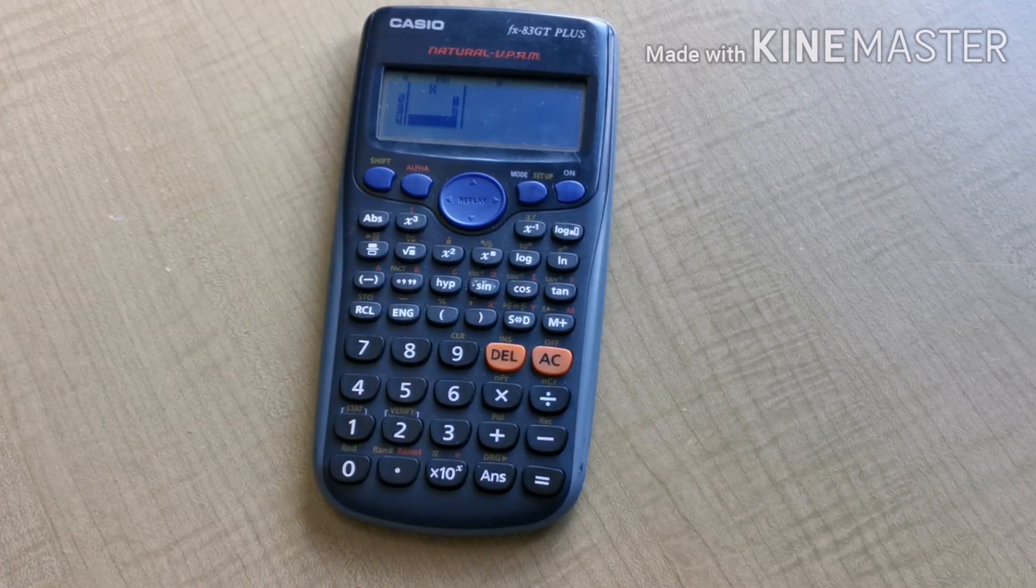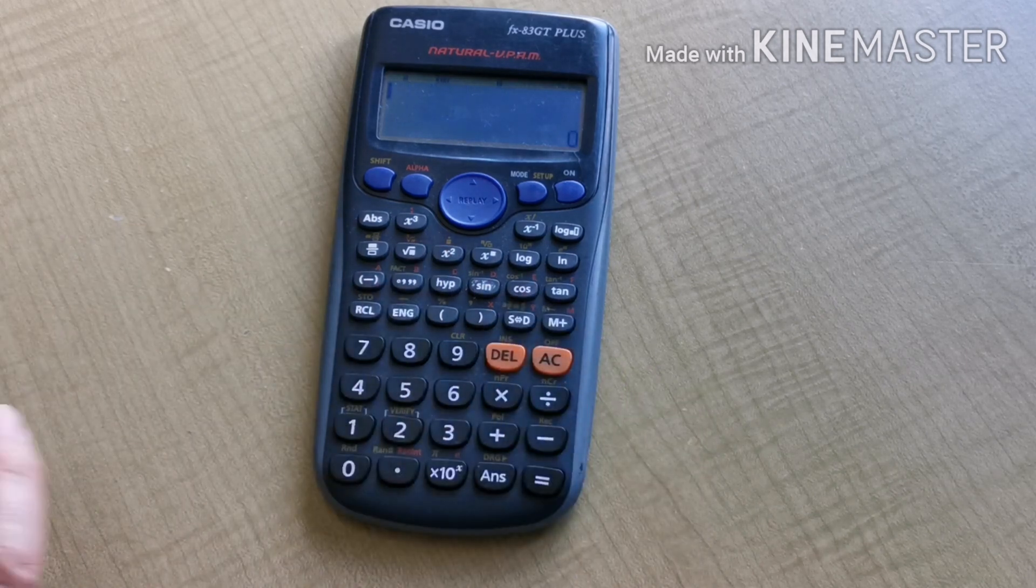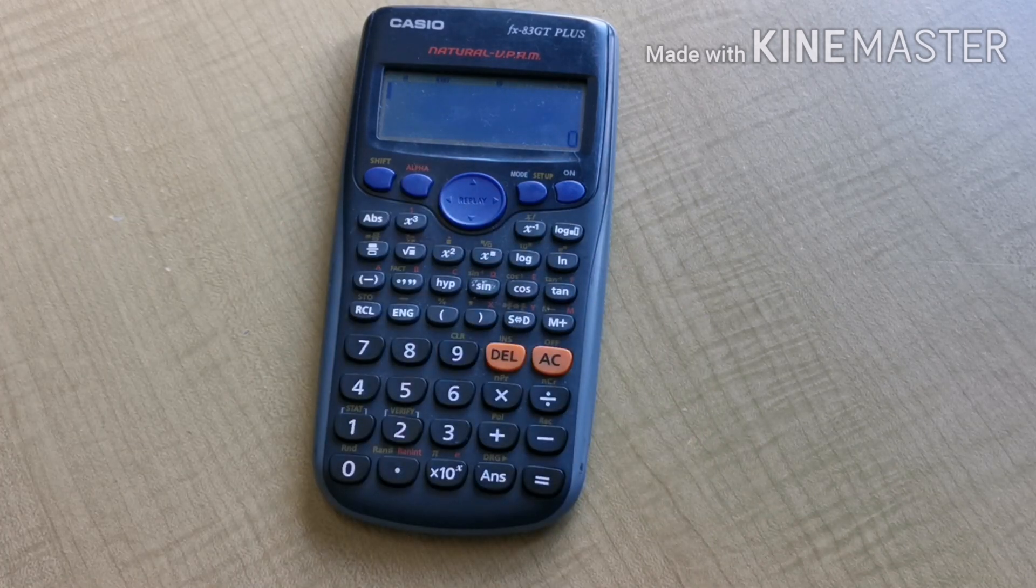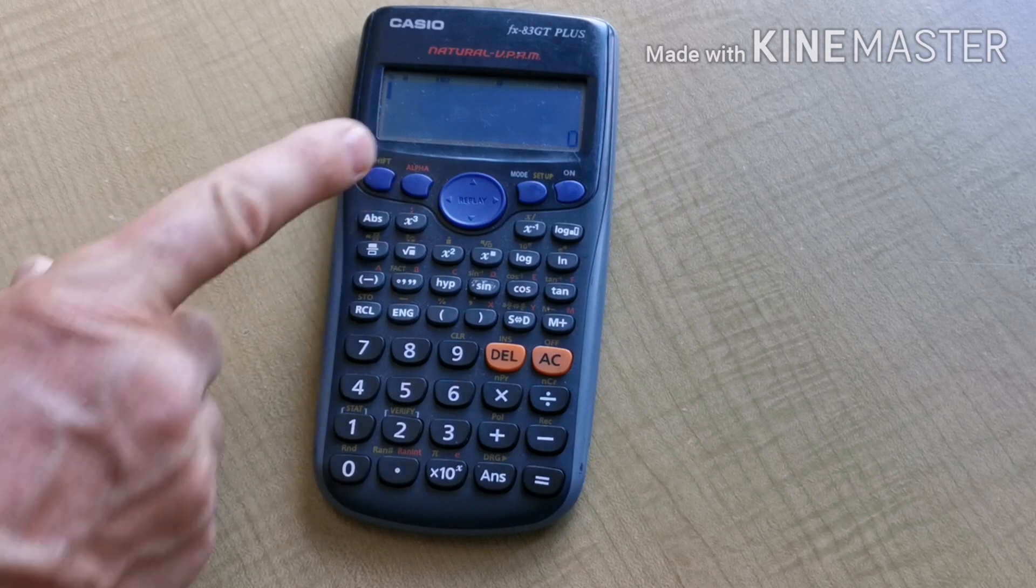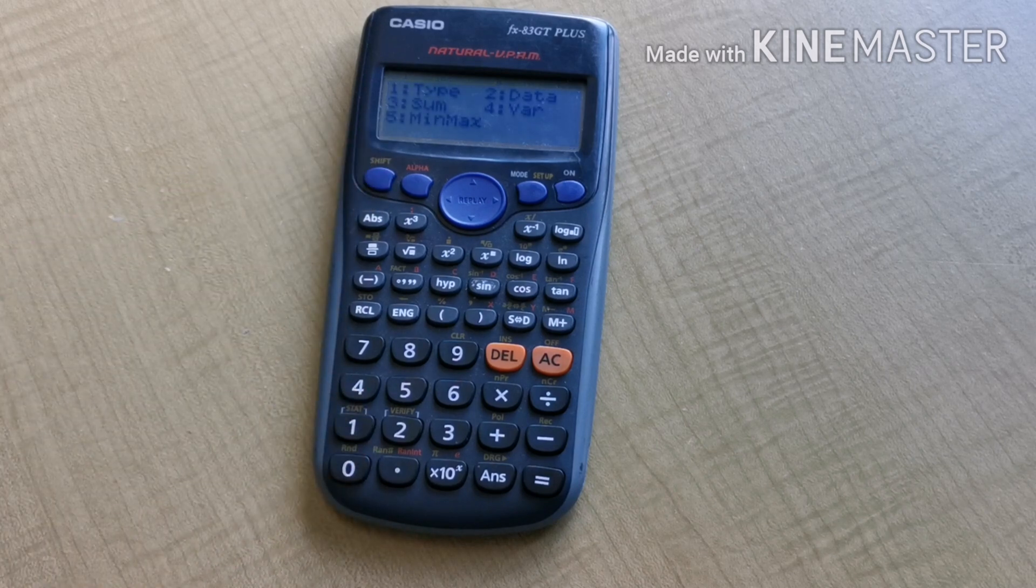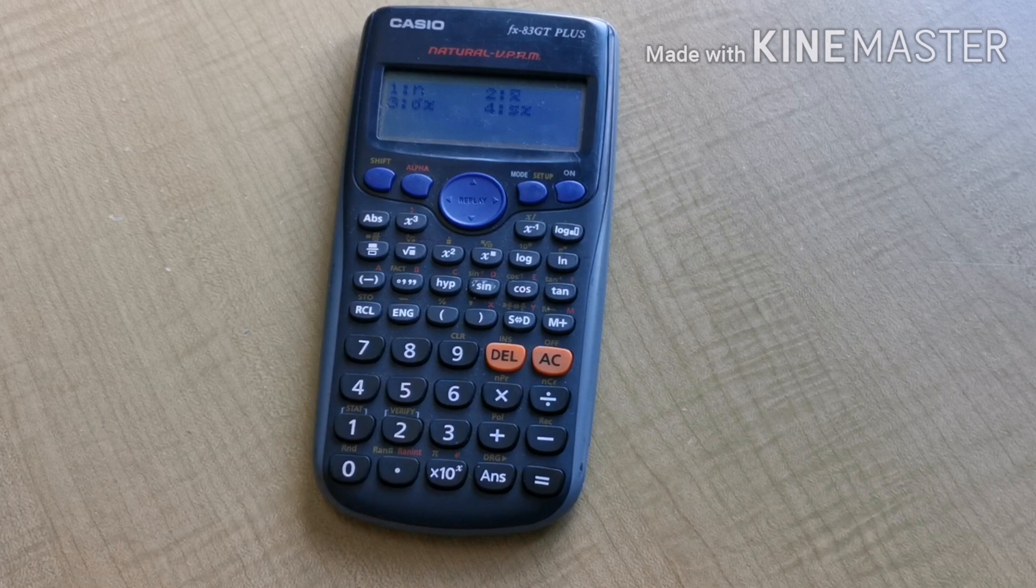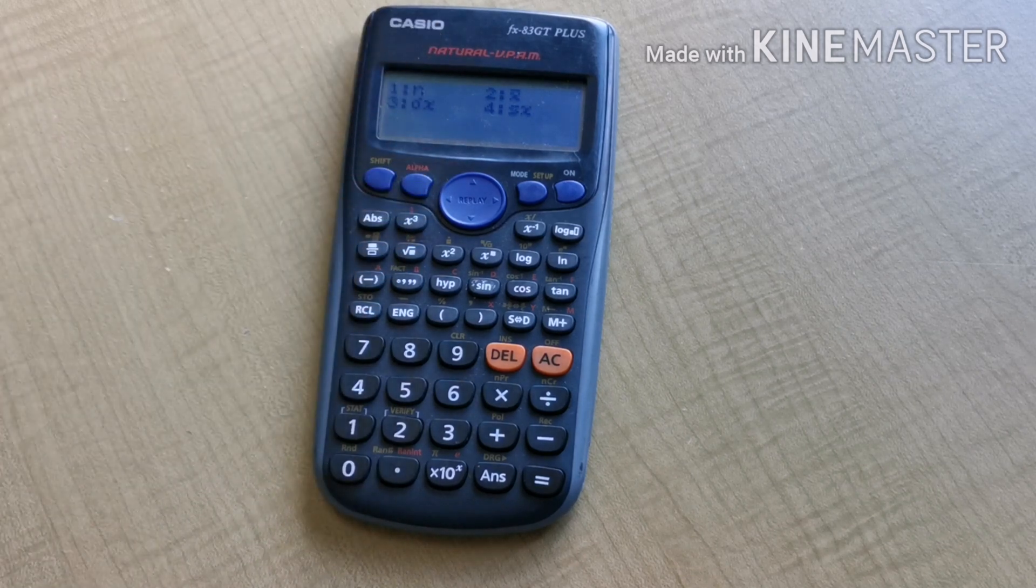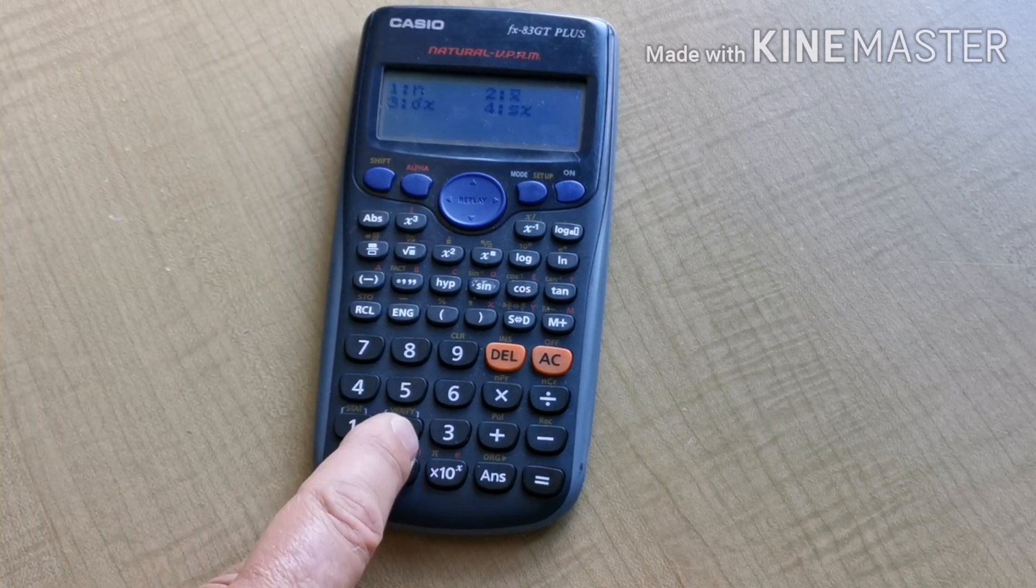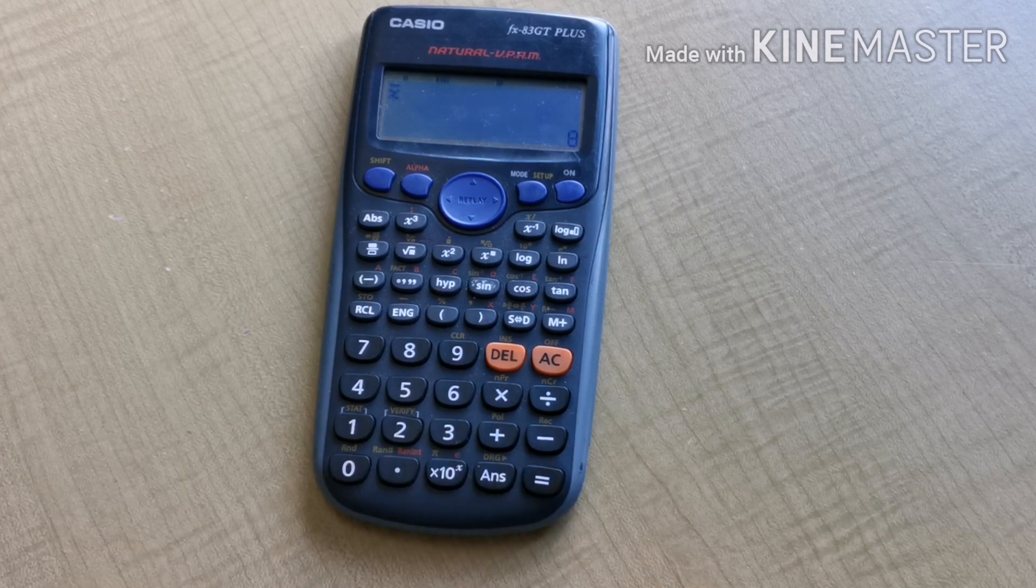Now we do something that seems a little bit strange. We press all clear. That just clears the screen so now we can ask to see the statistics. Press shift and 1 to bring up the stat menu, then press 4 for var. Then press either 2 for the mean or 4 for the standard deviation. I'll press 2 first of all and equals. X bar equals 8, which is the correct result for the mean.